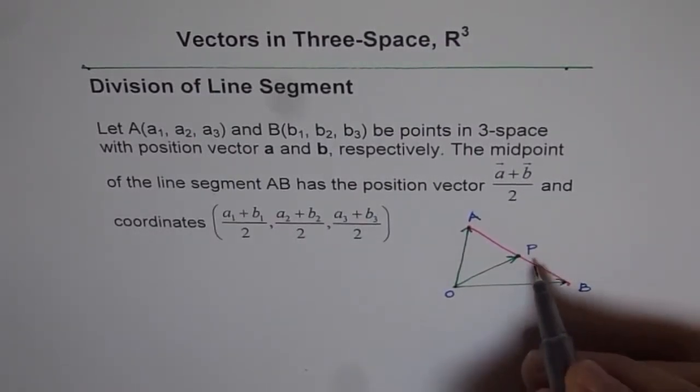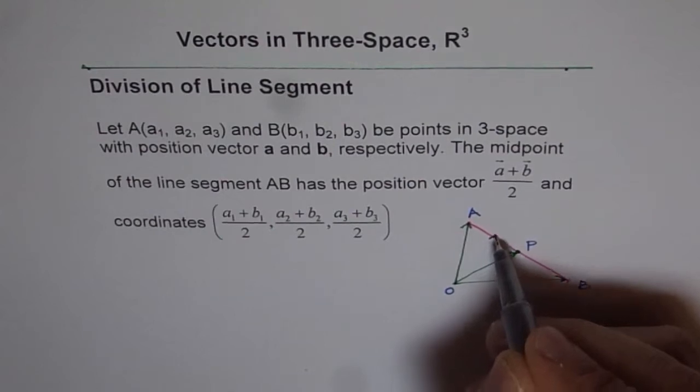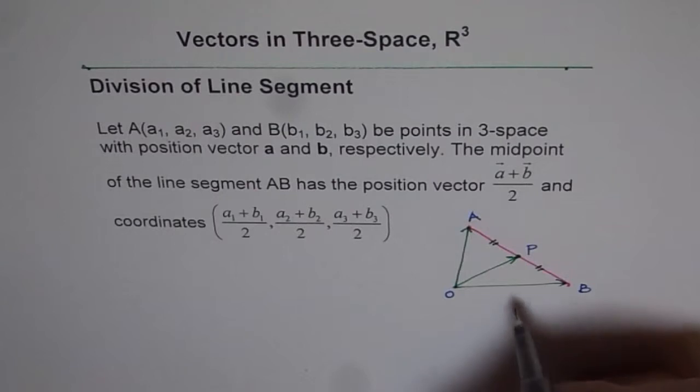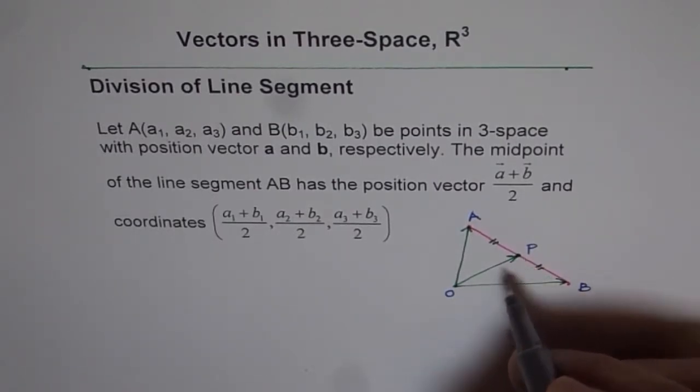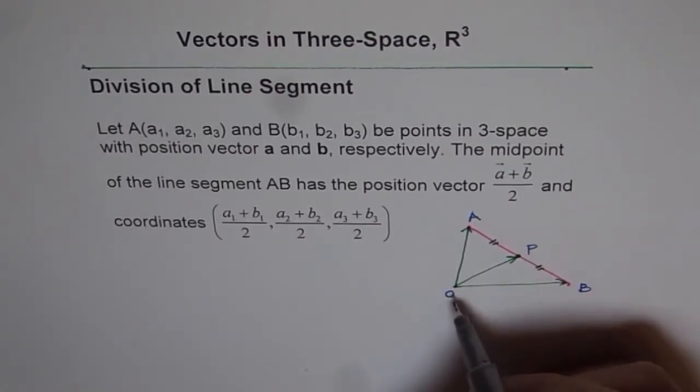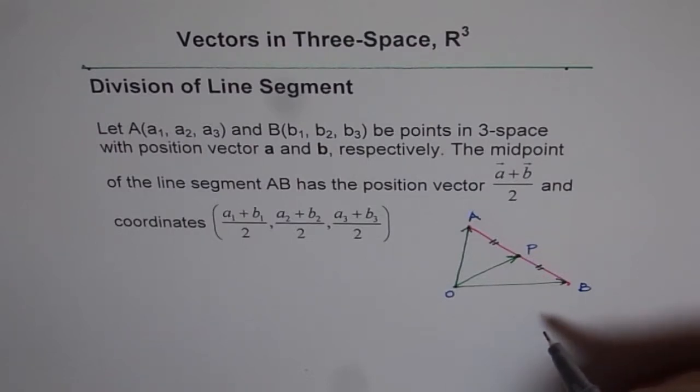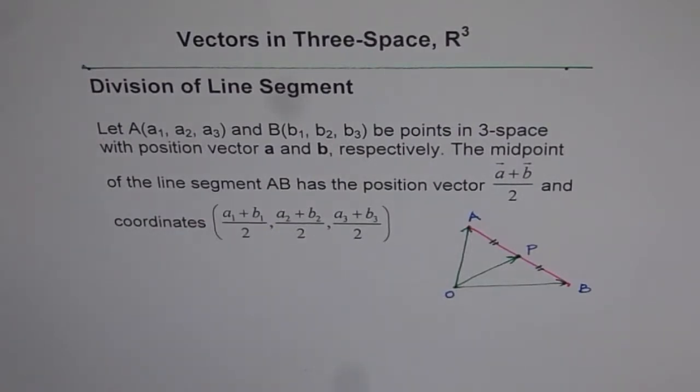Now we have taken this point P so that it divides the line segment exactly into two halves. So it's a midpoint. So that is how we have selected OP, the point P. Now we need to find the coordinates of point P. That means if we find the position vector OP, then we get the coordinates also. So that is the approach we are going to adopt here.